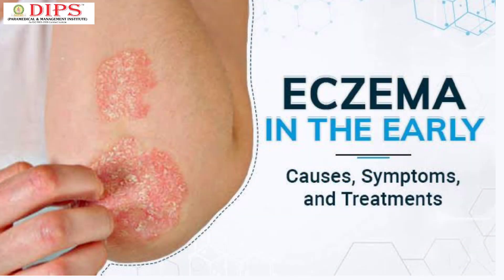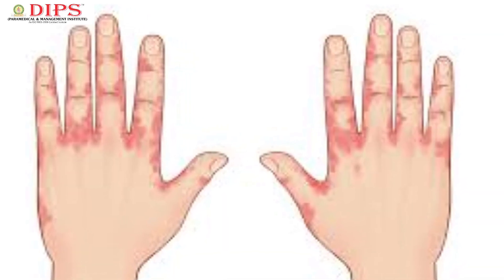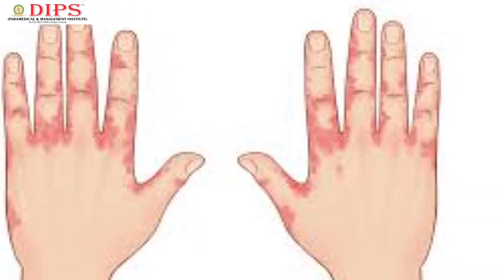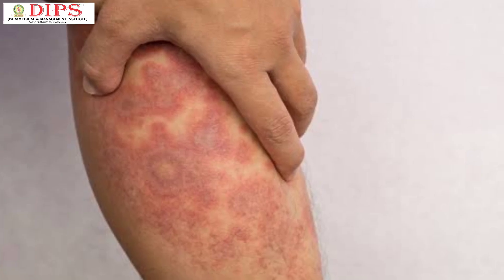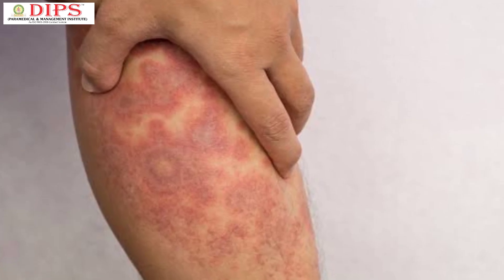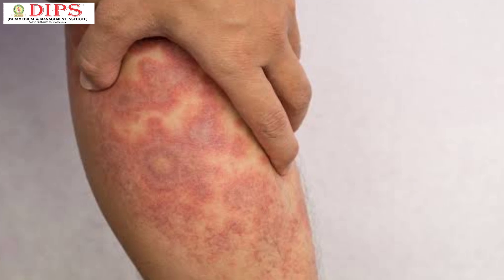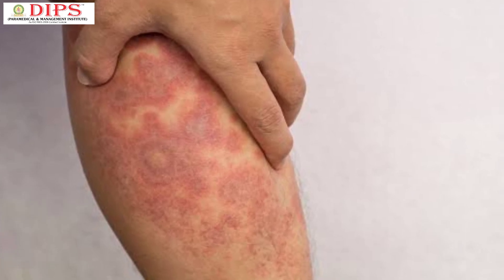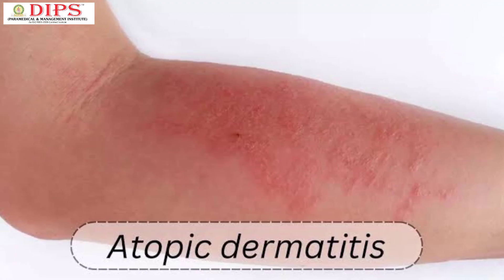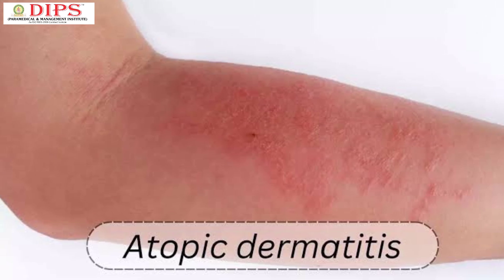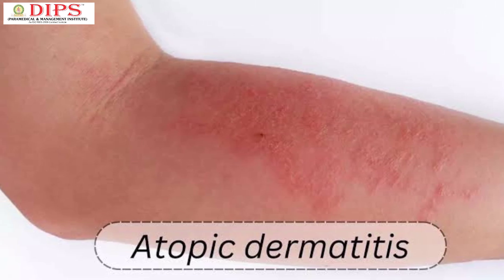Eczema is a common skin condition that causes itchiness, rashes, dry patches and infection. It is a type of dermatitis, which is a group of conditions that can inflame or irritate your skin. The most common type is atopic dermatitis or atopic eczema.